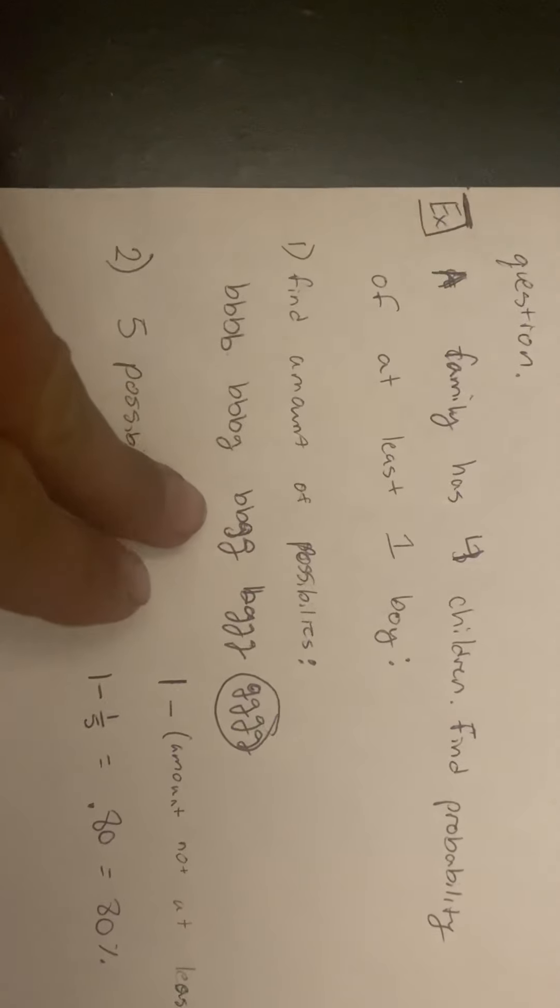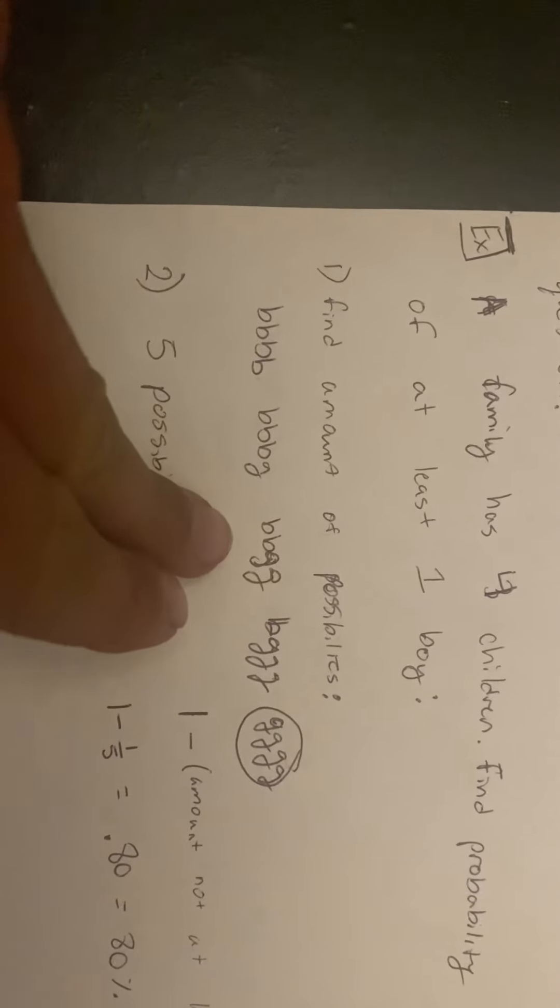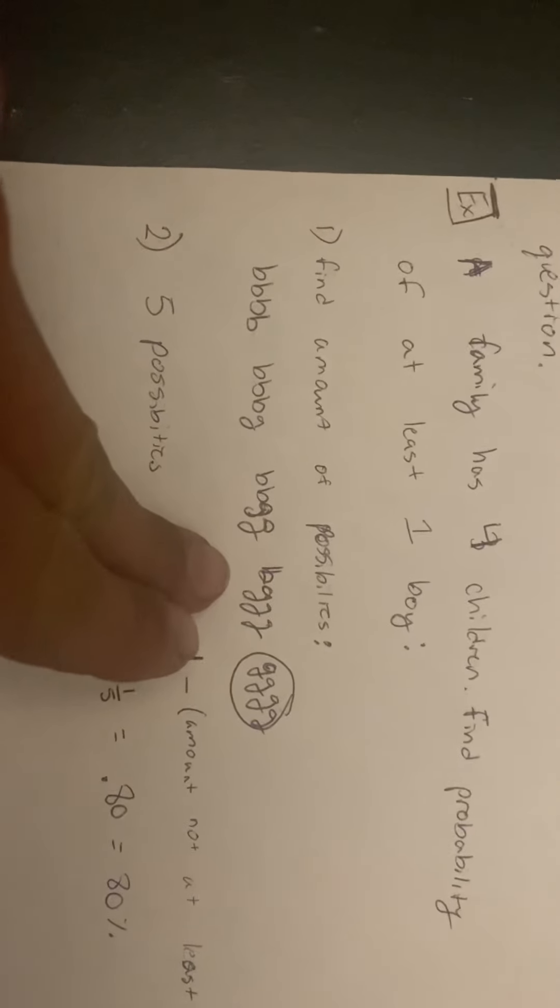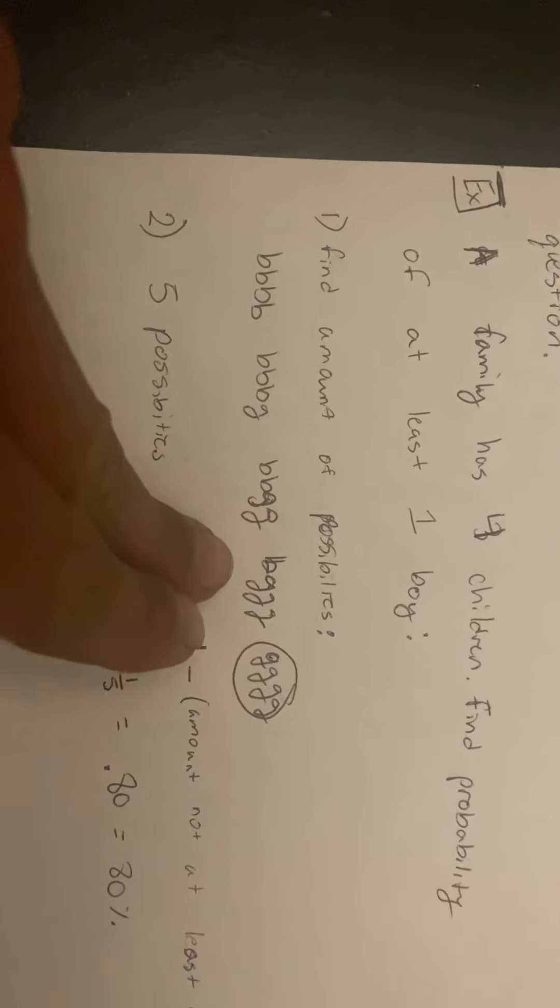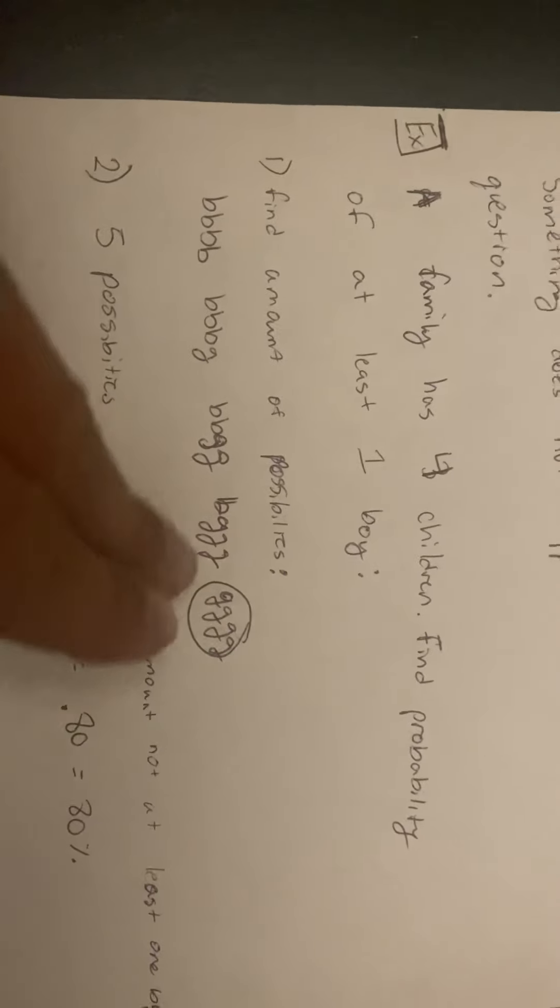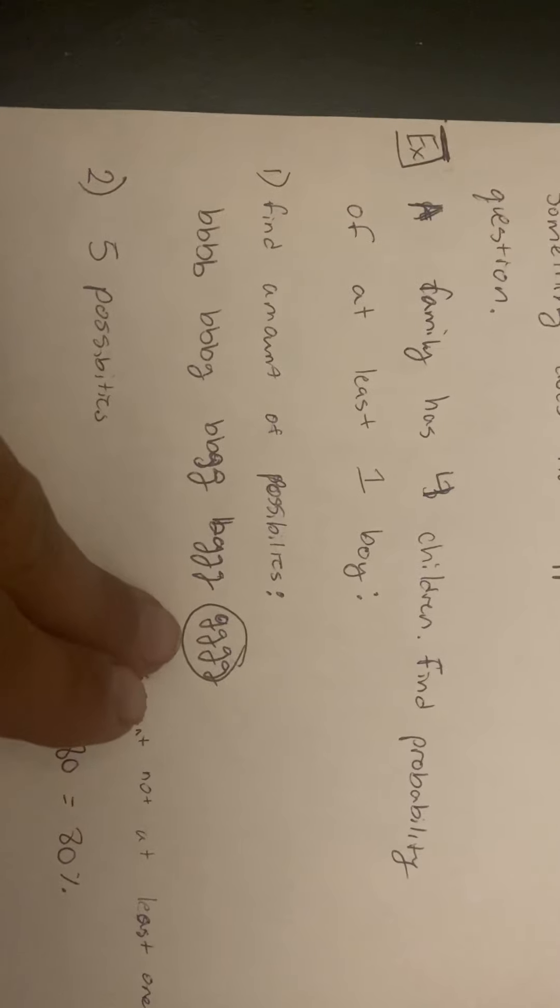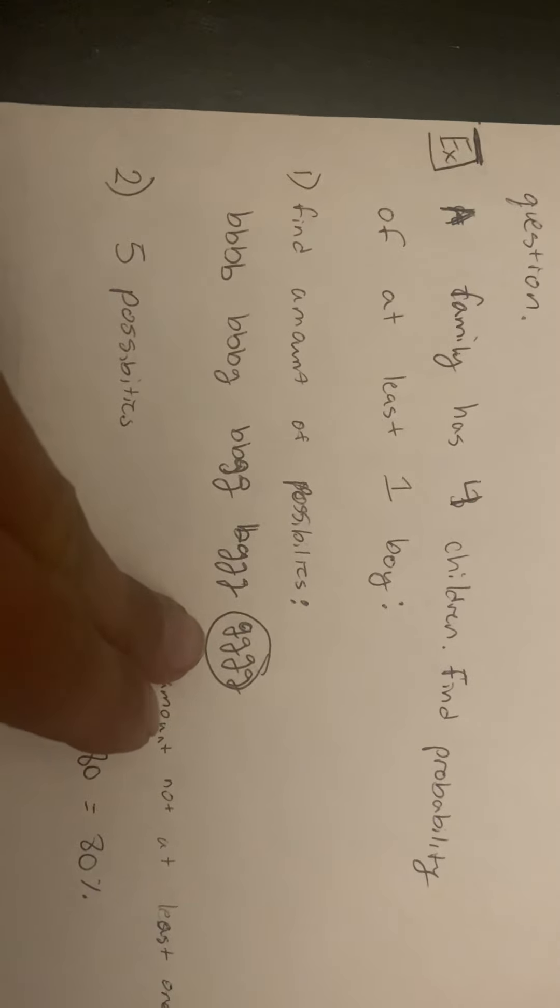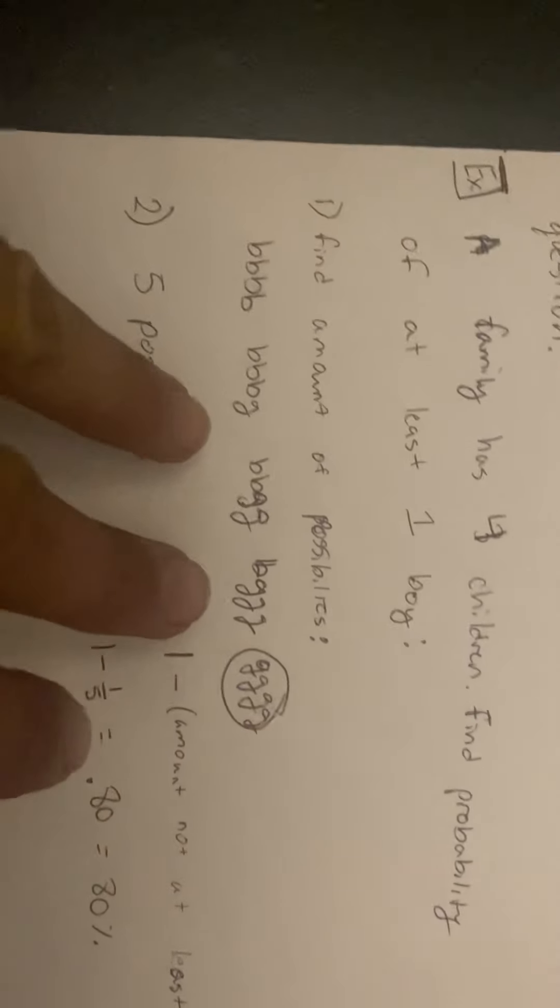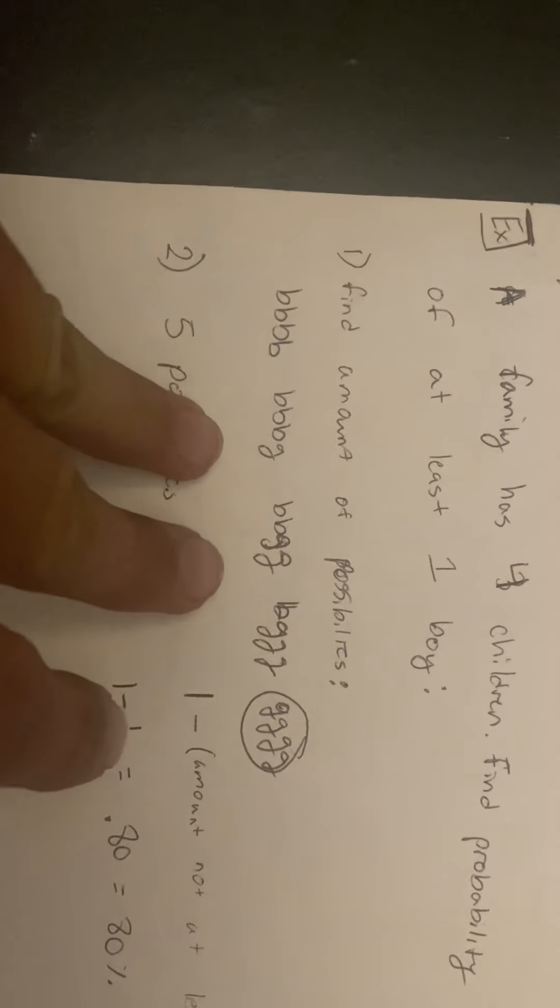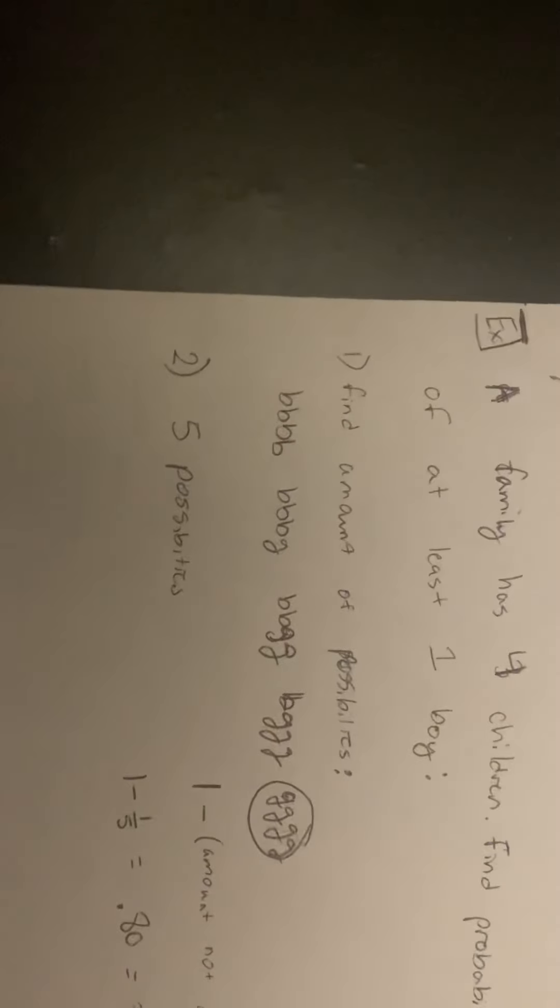After that, we have 2 boys and 2 girls. The next outcome is 1 boy and 3 girls. Because permutations and combinations are not involved with this type of problem, there is no need to find the exact order.